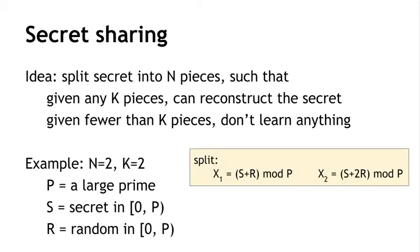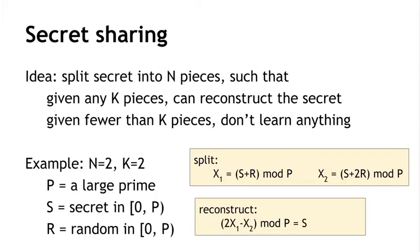Now we're going to split our secret into two pieces, x1 and x2. Piece x1 is going to be s plus r modulo p. Remember that modulo is the operation that's sometimes written with the percent sign in programming languages. It just means take this value s plus r and divide it by p and keep the remainder when we do that division. That's s plus r modulo p, so that'll be x1, our first share. And the other share, x2, is going to be s plus 2r modulo p. Now if we have both of these shares, x1 and x2, we can combine them to reconstruct the secret s.